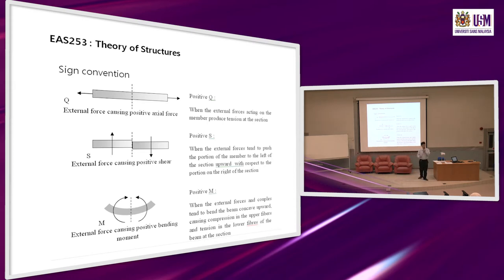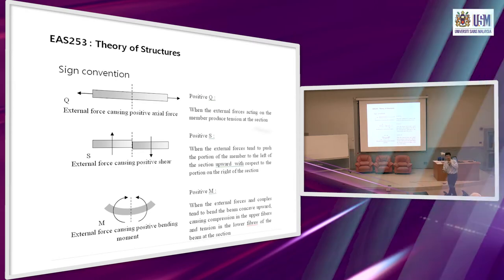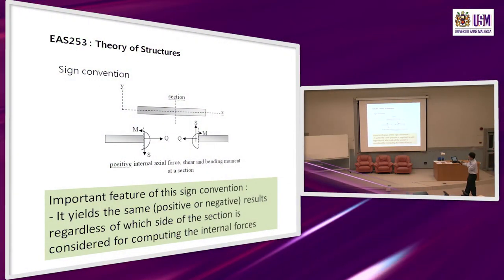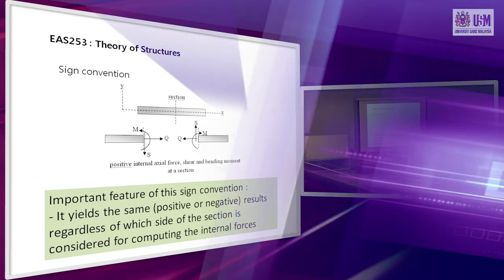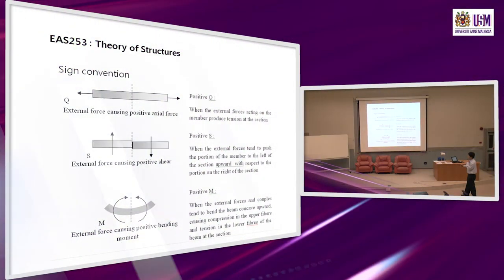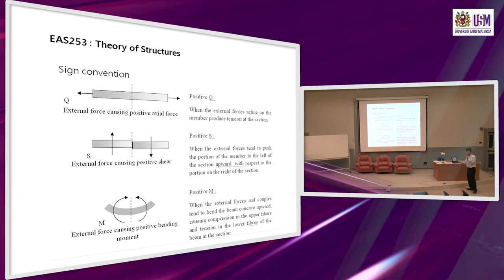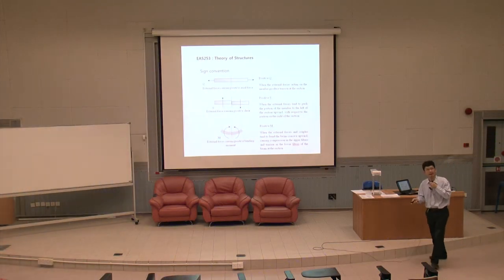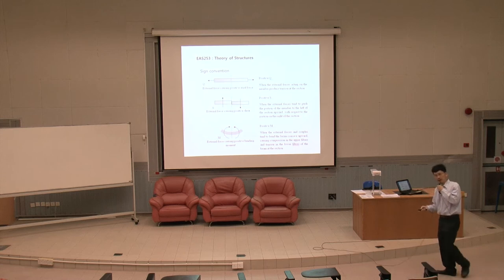If the beam bends upward (concave up), the top part is in compression and the bottom part is in tension. So if you get positive M, at that particular location the beam bends concave upwards. If you get negative M, the opposite occurs. That is the meaning of this sign convention.